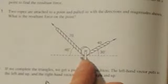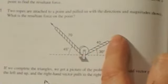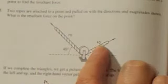On page 324, we have this picture. We have two ropes attached to a point and pulled on with the directions and magnitudes shown. What is the resultant force on the point? This point is being pulled in two different ways. It's being pulled this way with a force of 40 and at an angle of 30 degrees.